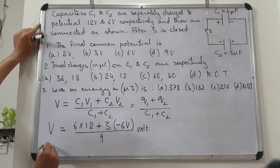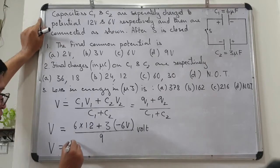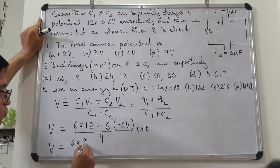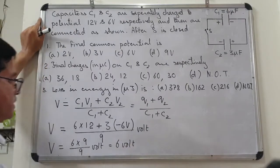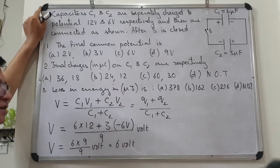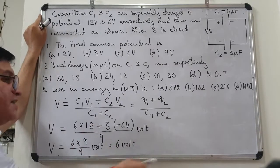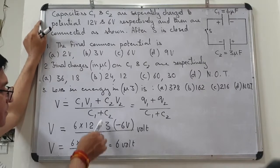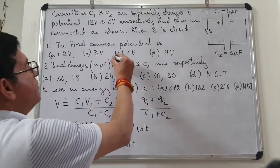Calculating: take 6 common from numerator → 6×(12 − 3) = 6×9 = 54; denominator = 9. So V = 54/9 = 6 volt. Alternatively: 6×12 = 72, 3×6 = 18, 72 − 18 = 54, divided by 9 = 6 volt. तो common potential = 6 volt।